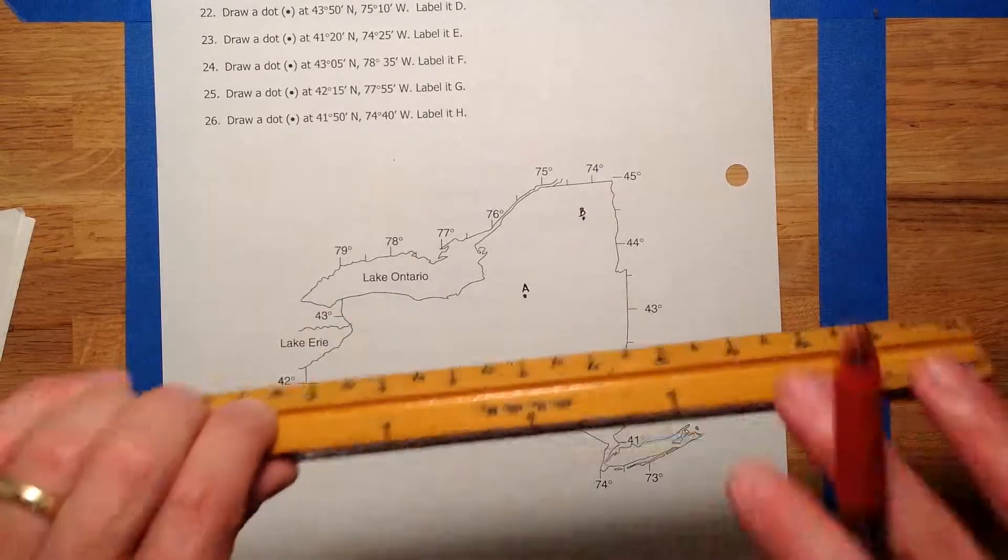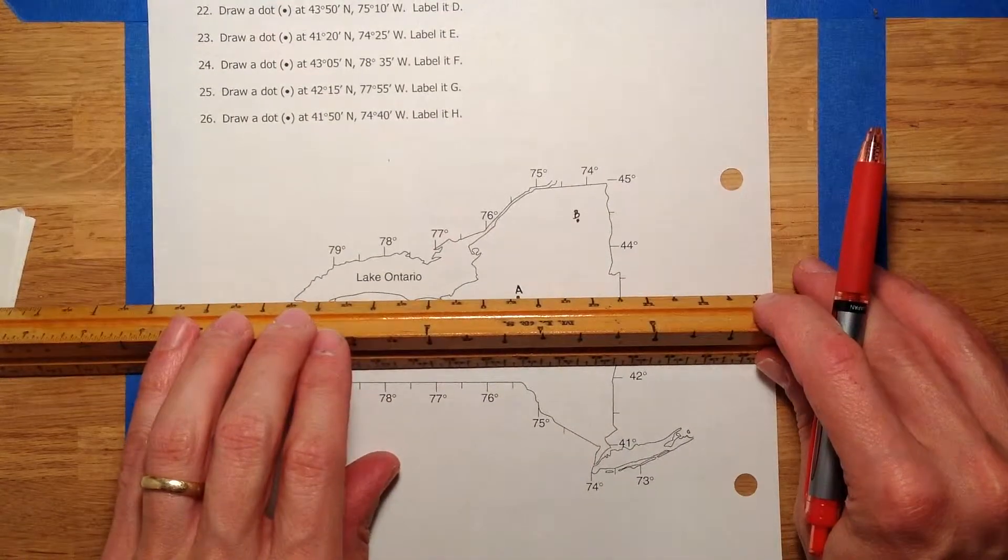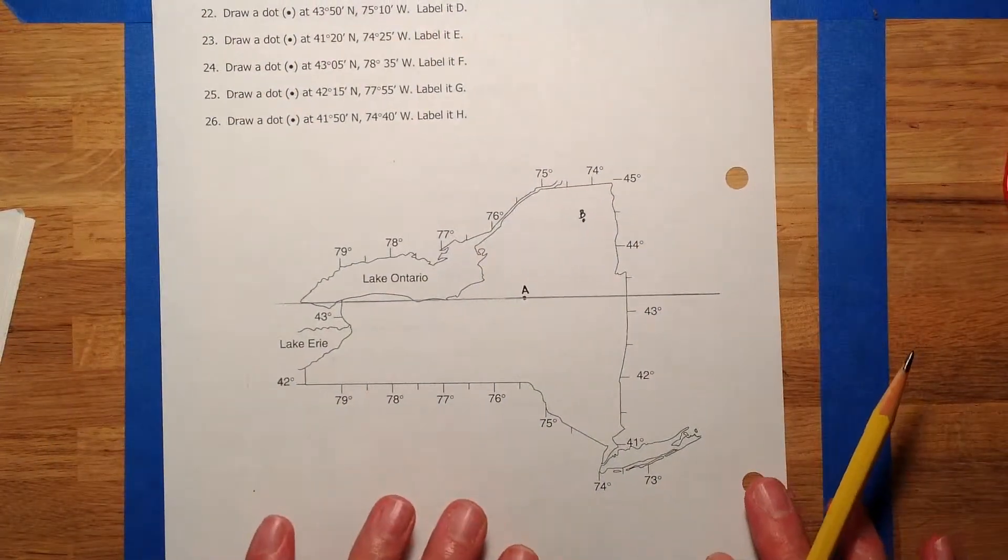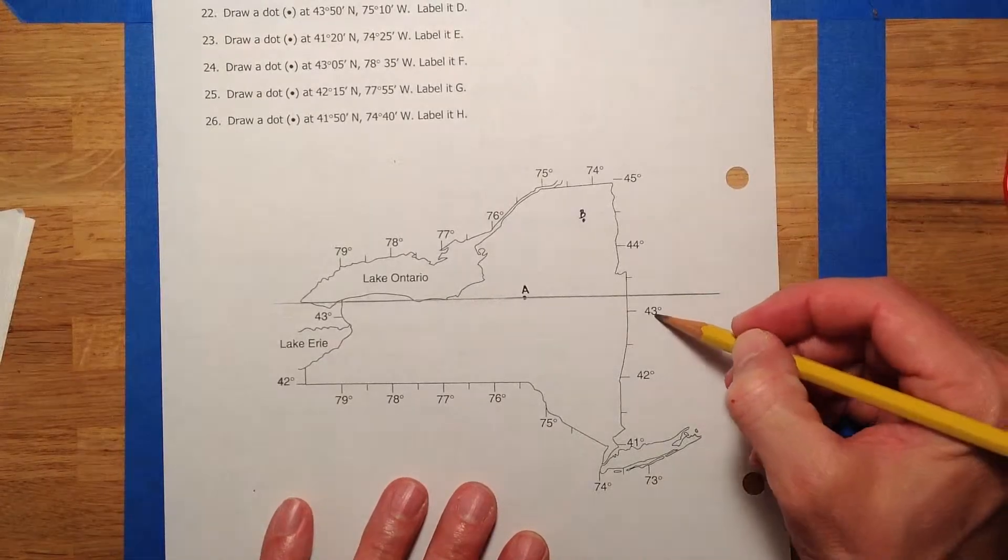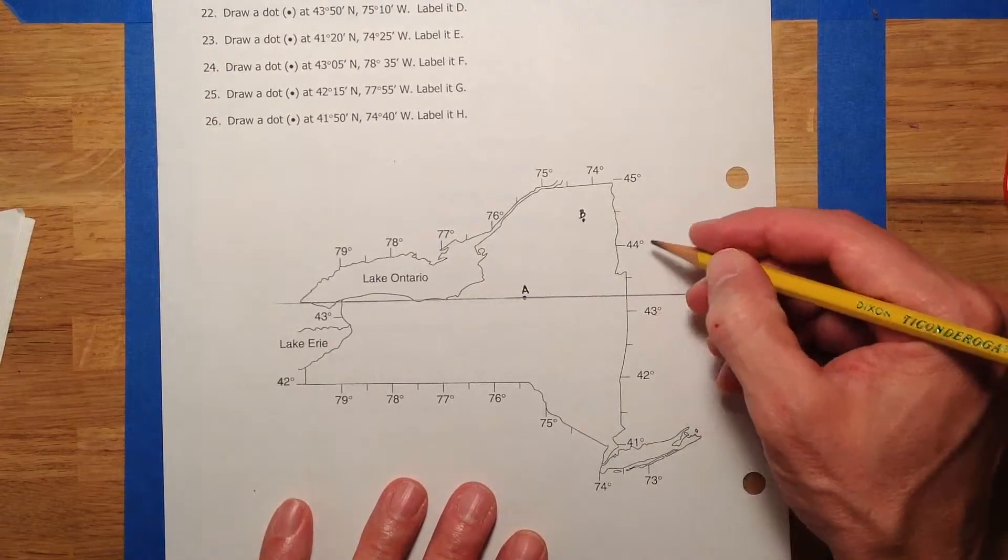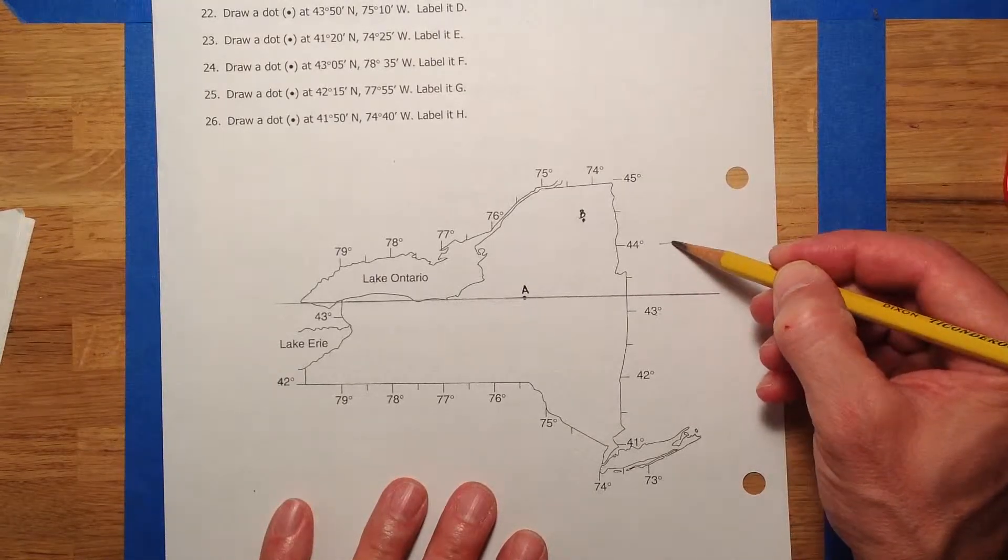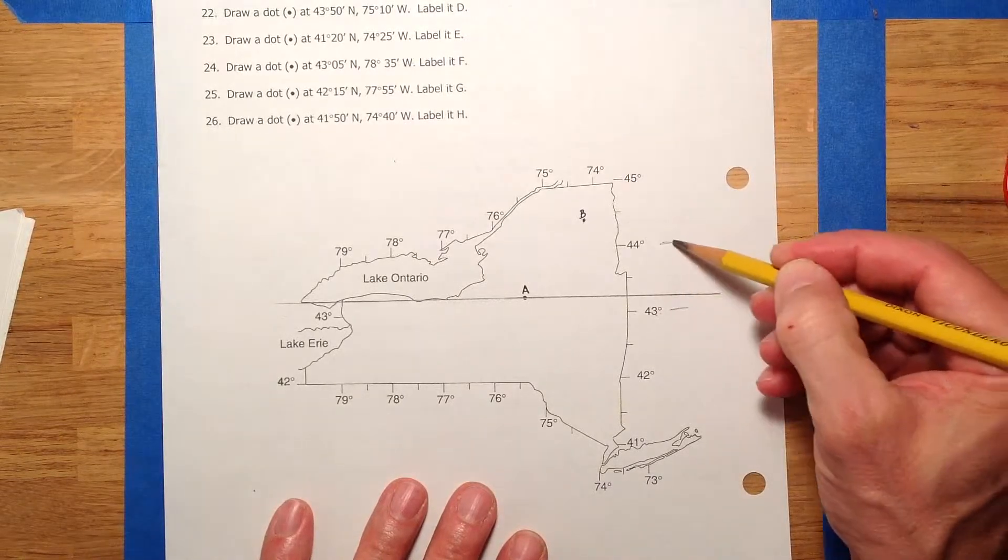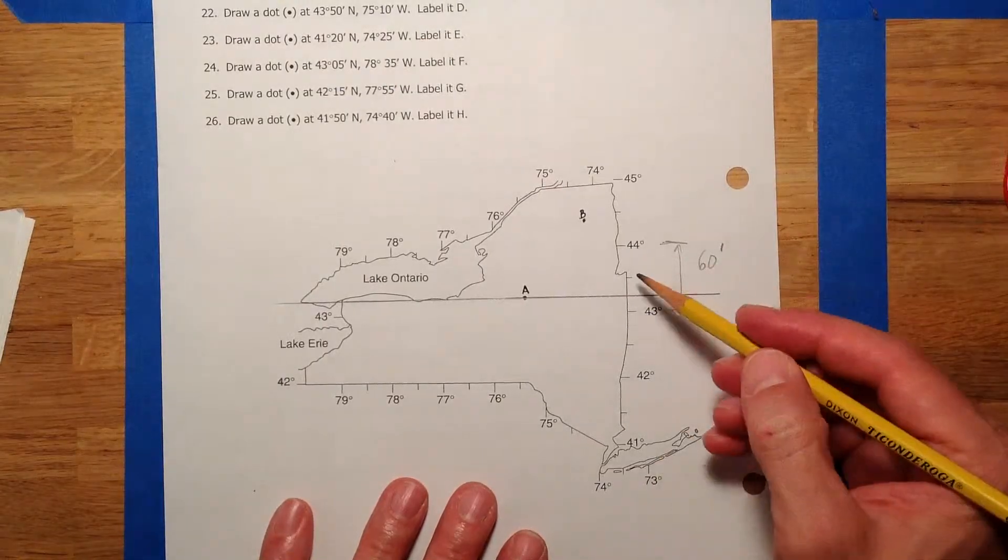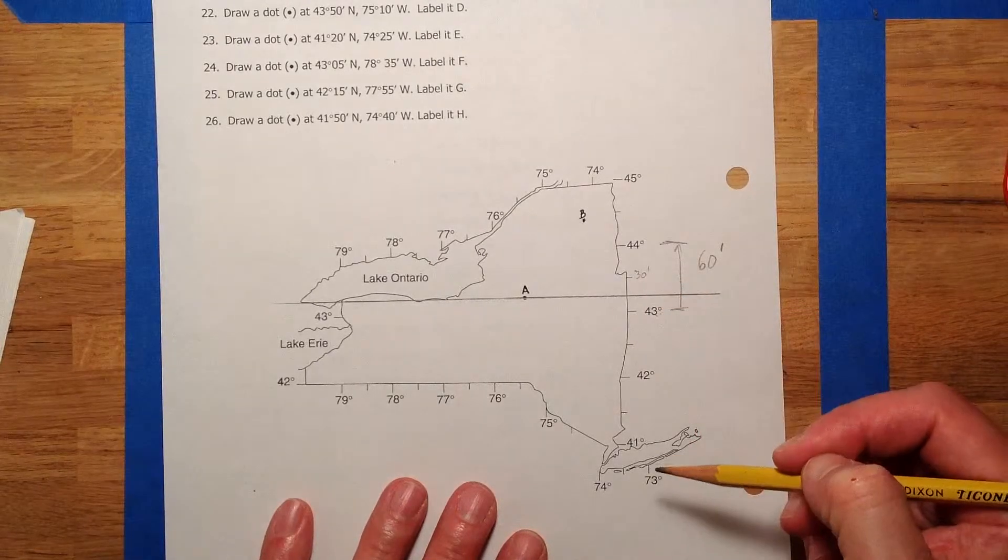So, latitude of A. Maybe what you should do, I'm going to try to get this straight. I'm going to draw this across like this. Okay, that is a latitude line for A. And it is not on 43, and it's not on 44, so it's kind of between them. So, it's going to be 43 degrees and some minutes. One degree in this case is broken up into 60 minutes. That's the symbol for minutes. Therefore, this little halfway is 43 degrees and that's 30 minutes.